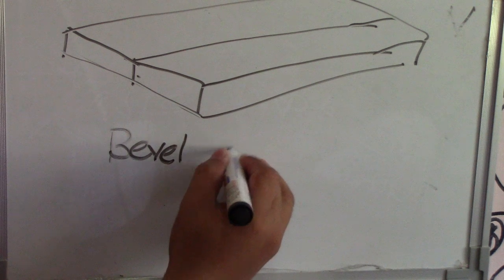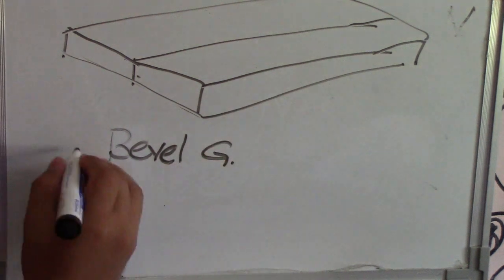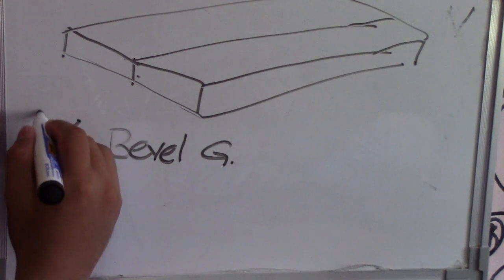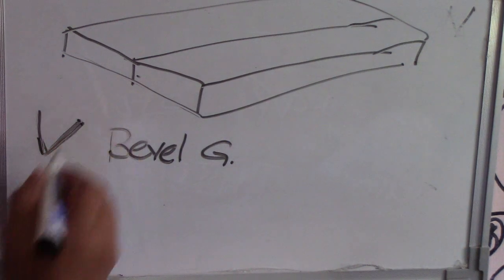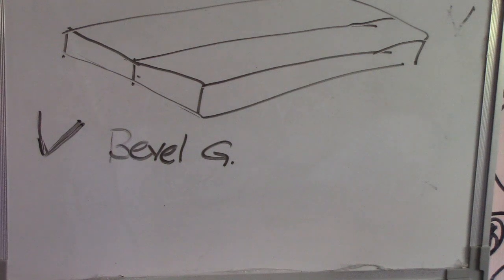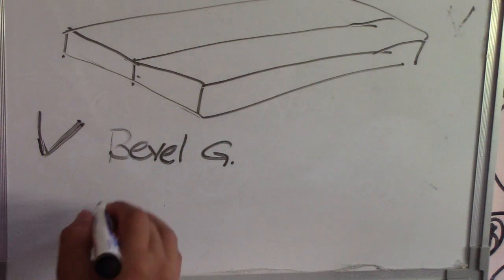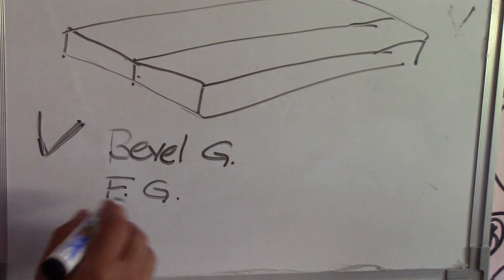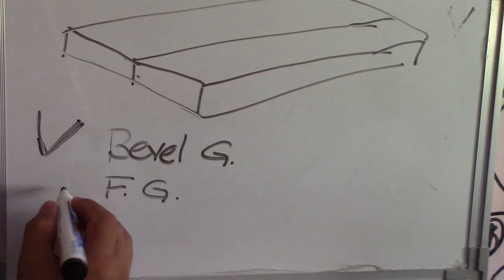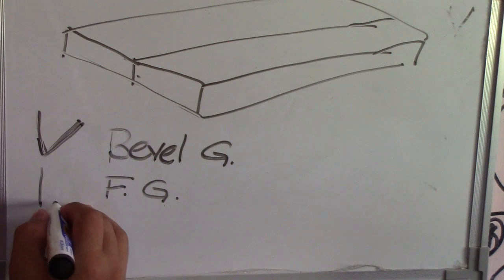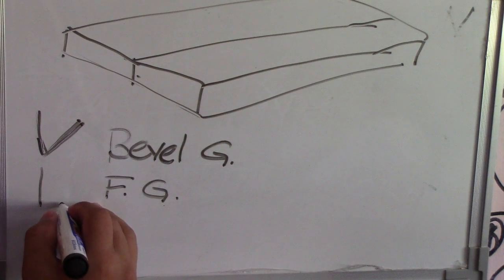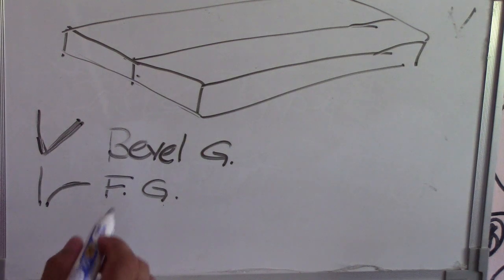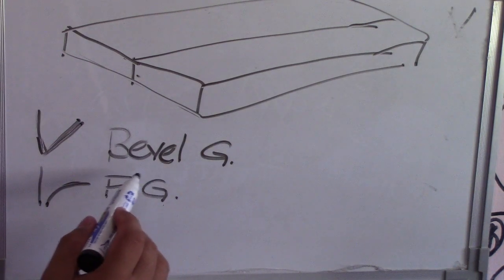So I wrote bevel groove here. What is the symbol of bevel groove? This is the symbol — it looks like this. So this is the symbol of bevel groove. When you see that symbol, its name is bevel groove.